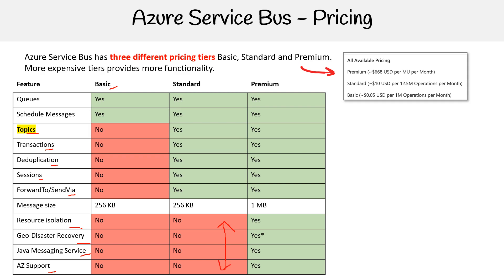In premium, we get basically everything. Notice the big bump in terms of message size between basic, standard, and premium. So the thing I really want you to remember is that in basic, there are no topics.